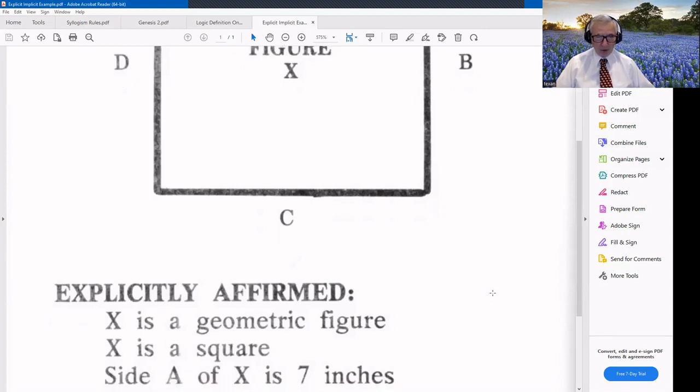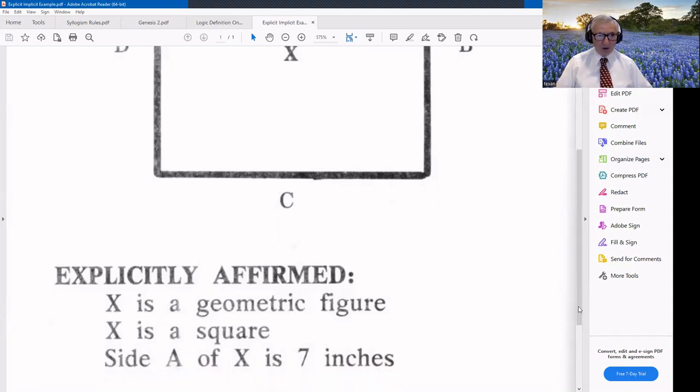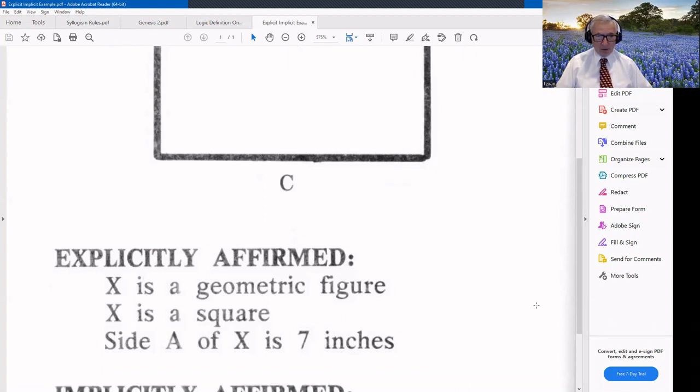And of course, just looking at it, we believe it to be a square. We haven't measured it, but we believe it to be a square. But we know it has four sides, and from the looks of things, all angles are 90 degrees. So we can say explicitly that this is a geometric figure. That's true. That's just what it is.